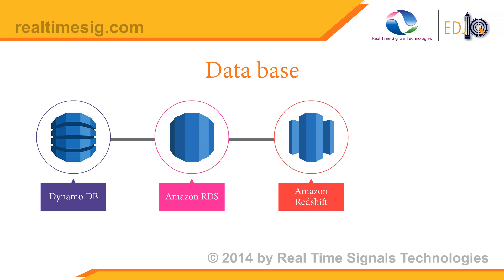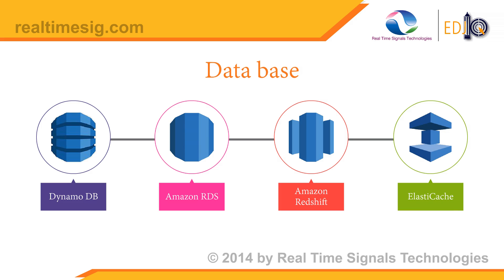Amazon Redshift is a fully managed petabyte-scale data warehouse service in the cloud. You can start with just a few hundred gigabytes of data and scale to a petabyte or more. Amazon ElastiCache offers fully managed Redis and Memcached, letting you build data-intensive apps or improve performance by retrieving data from high-throughput, low-latency in-memory data stores. ElastiCache is popular for gaming, ad tech, financial services, healthcare, and IoT apps.